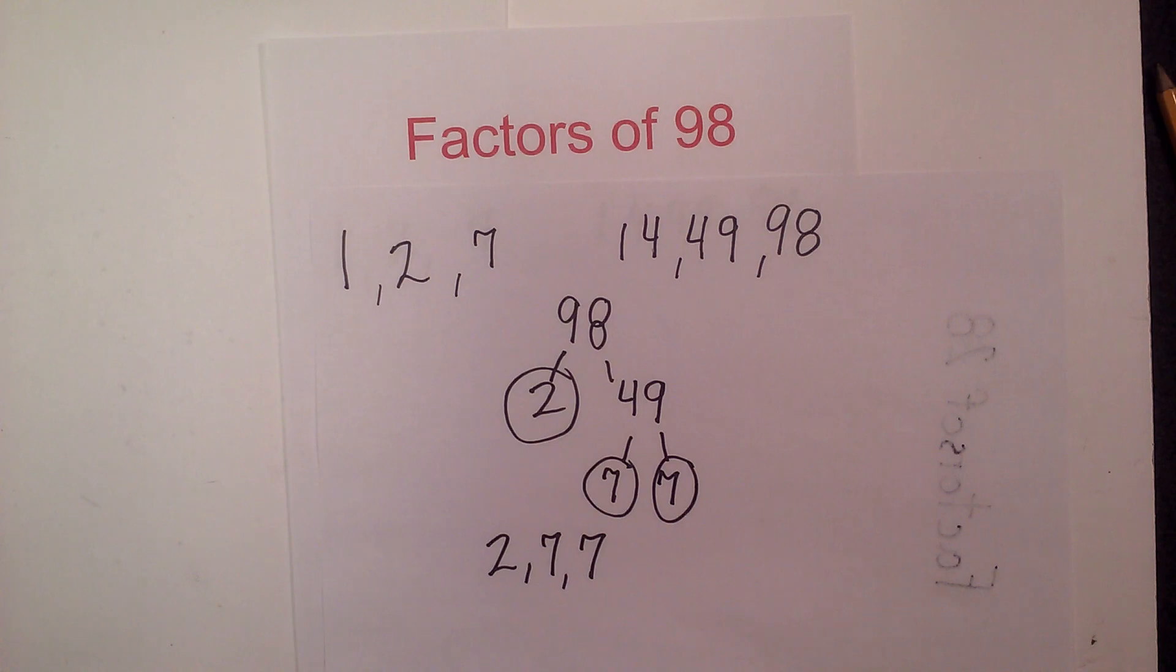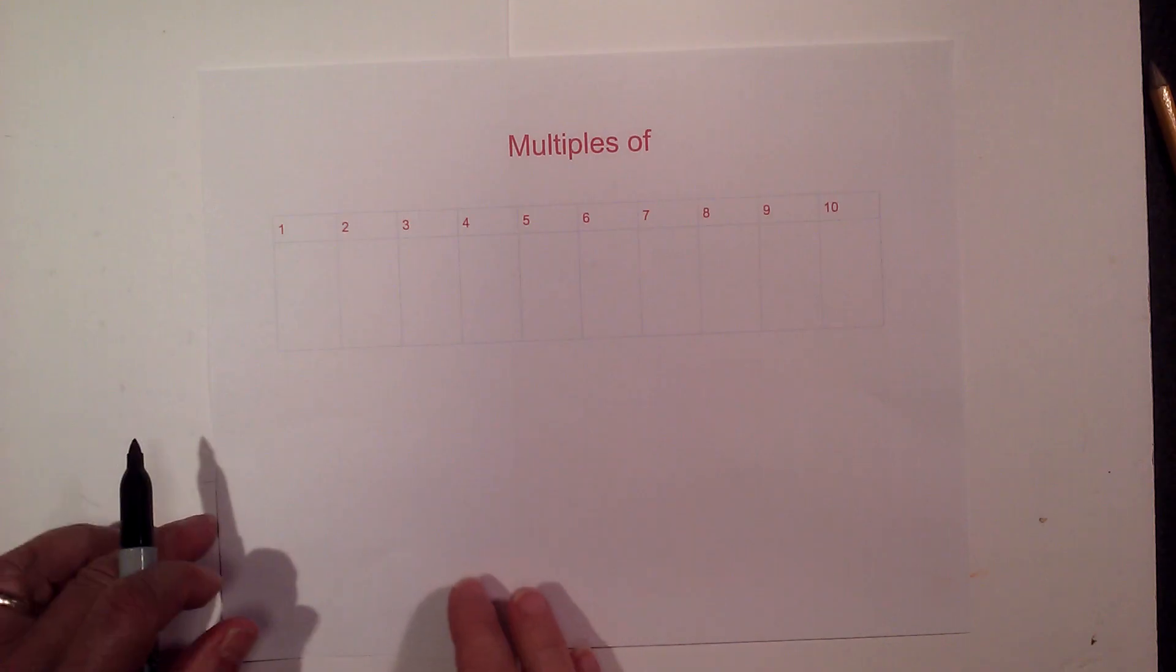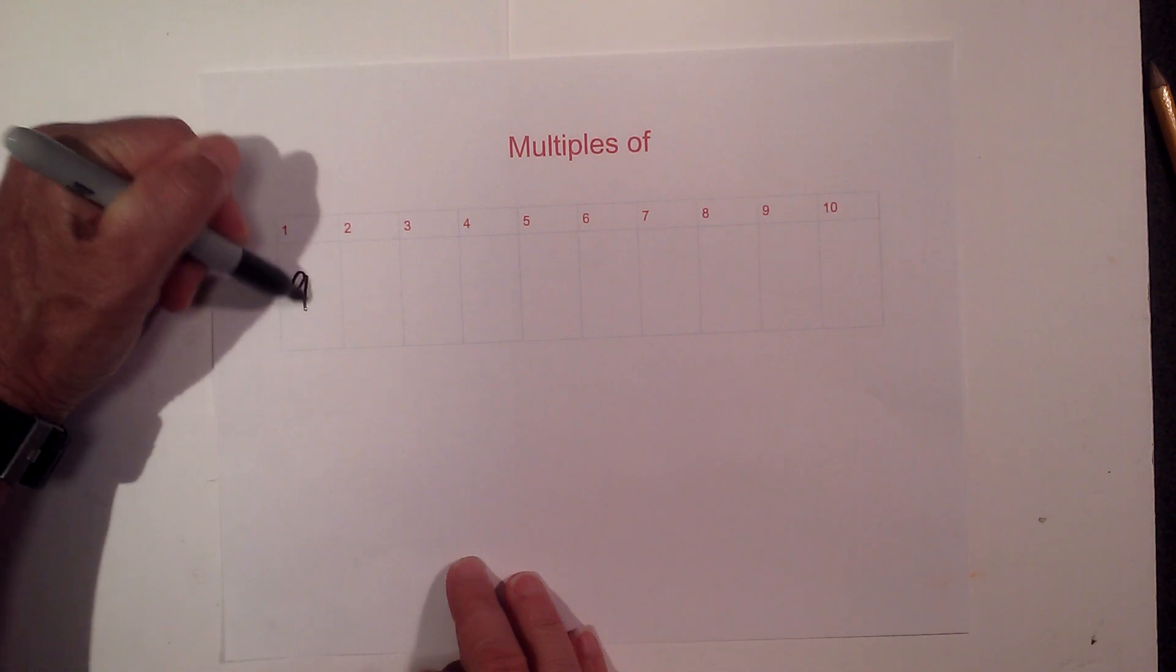Now let's go through the multiples of 98. Okay, the multiples of 98 are as follows. We have 98,